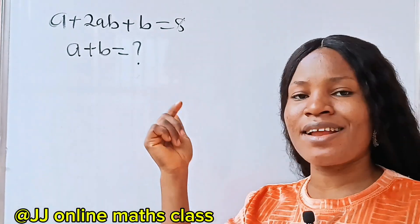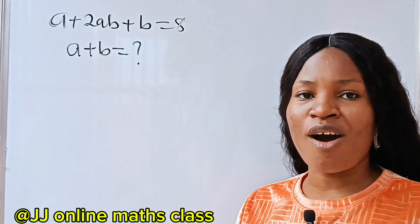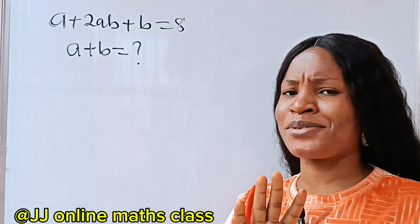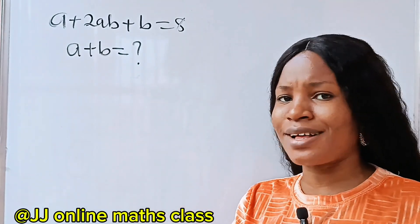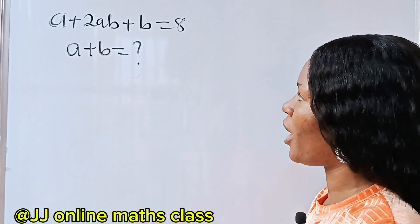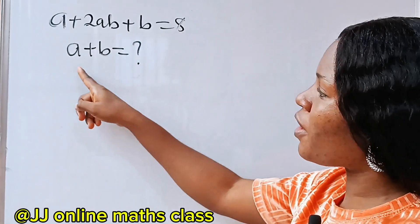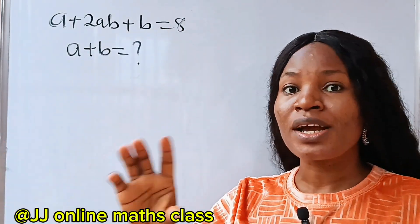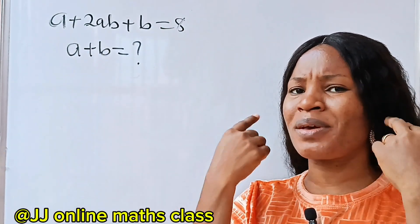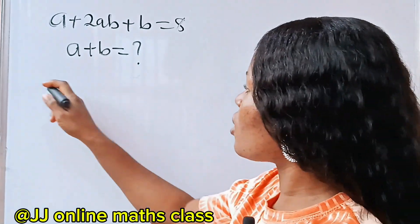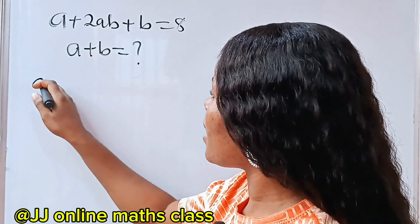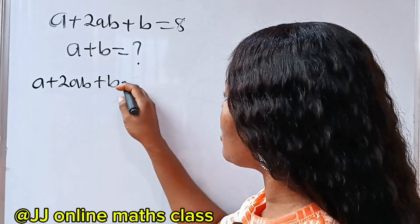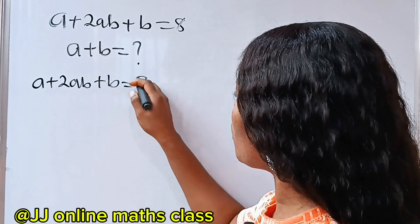Hi, let's solve this together. This is JJ Online Math Class. This is a very interesting question so I want you to sit tight and let's enjoy this together. We are asked to solve for the value of a plus b. This is very simple but we need to be tactical to get it. So this is what we have: a plus 2ab plus b is equal to 8.